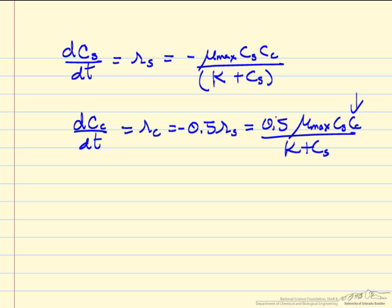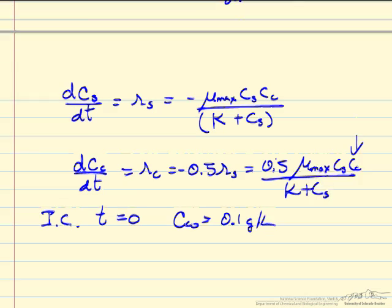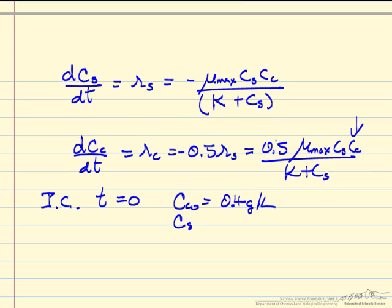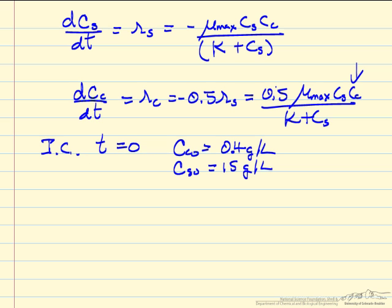So we have two differential equations, and we have initial conditions, namely at time equals zero, the concentration of C is 0.4 grams per liter, and the concentration of S is 15 grams per liter. So we have two ordinary differential equations, and this is an initial value problem.